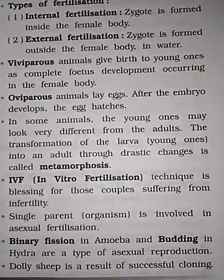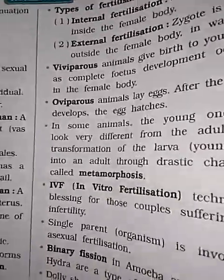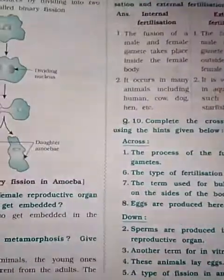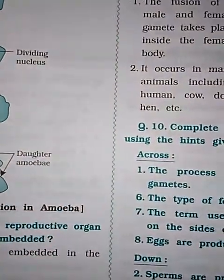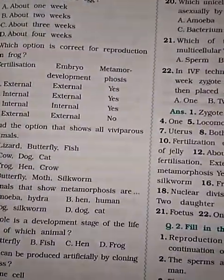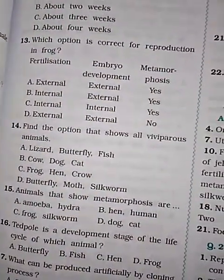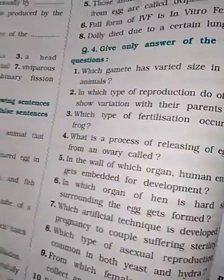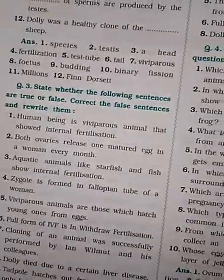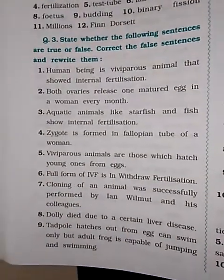Here are your remember points for lesson number 9 — reproduction in animals — finished. Now today I am taking your objectives and explaining them. In the next session we have done the MCQs, so today I am going to take your true or false. State whether the following sentences are true or false, and correct the false statements and rewrite them.